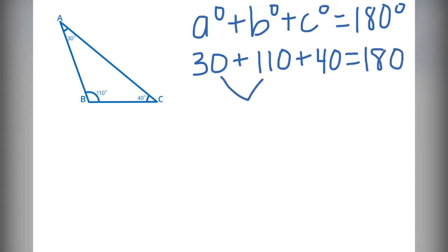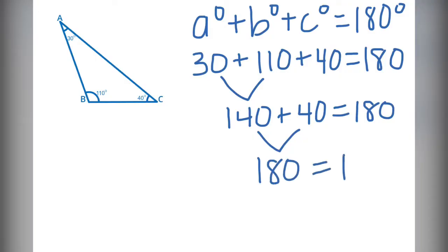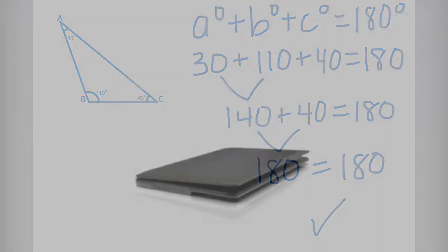30 and 110 is 140. Combine 140 with 40 gives me 180. 180 equals 180, and again it checks out.